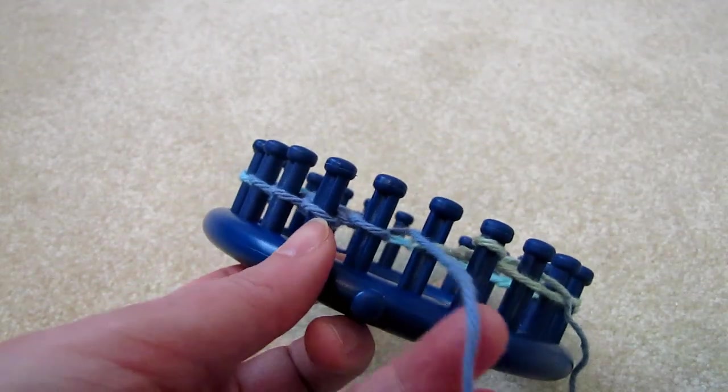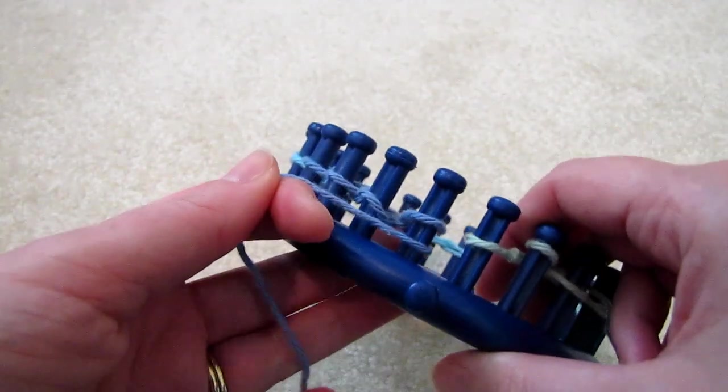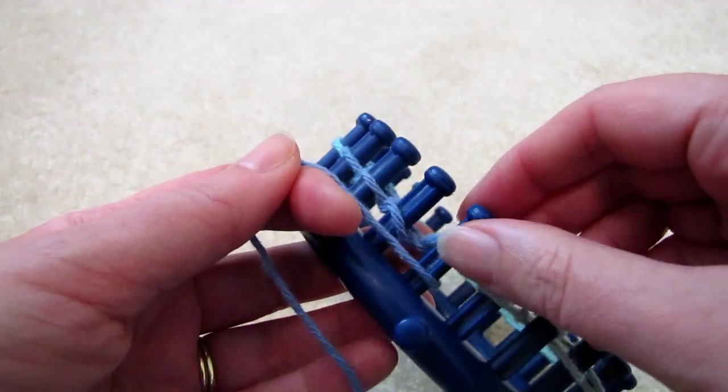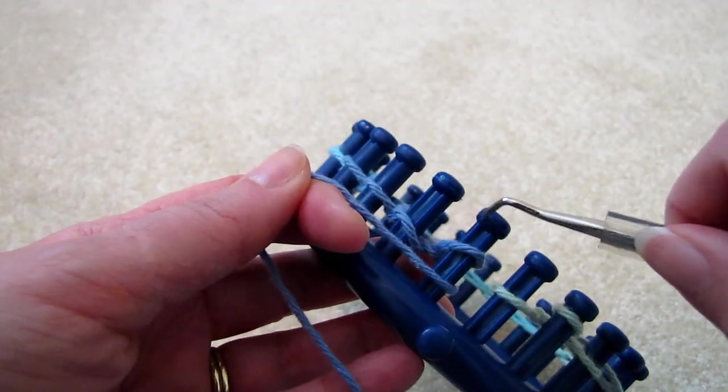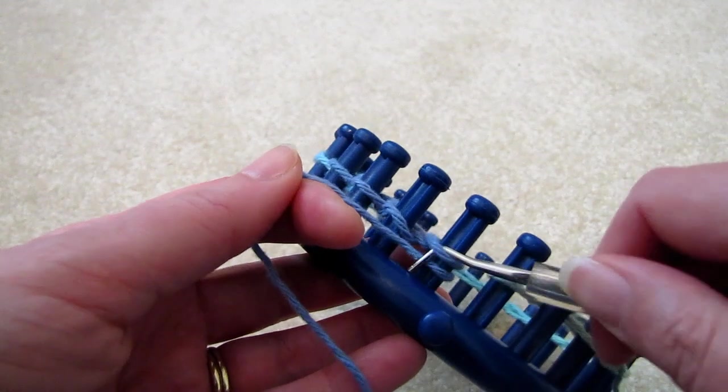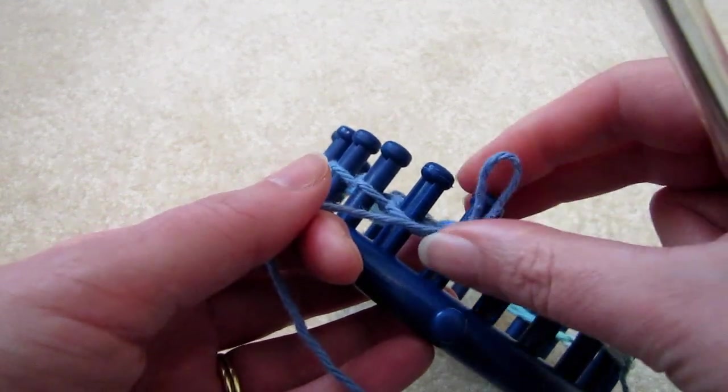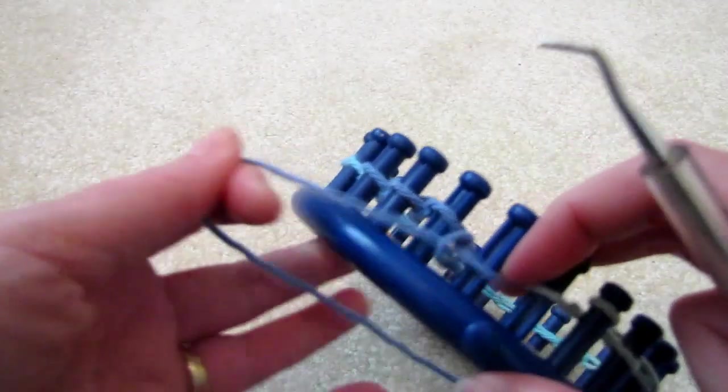The first row will purl. So bring the yarn outside underneath the loop that's there, then from above scoop up the yarn and form a new loop.